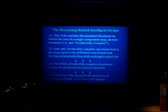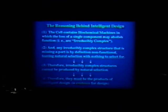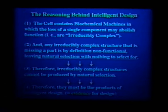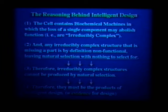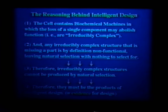As I understand the reasoning behind intelligent design, let me ask if I've got it right. The evidence for design is at the bottom of this statement. Let's start at the top: the cell contains biochemical machines in which, if you lose a single component, it will abolish function — and that's your definition of irreducibly complex. I agree with you; I'll stipulate number one is right.